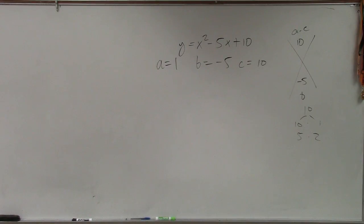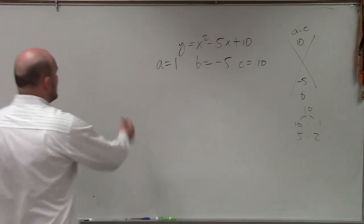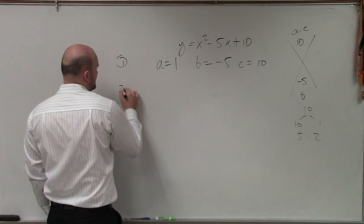Once you go ahead and label this, the next thing, that's step number 1. Now, step number 2 is to identify the discriminant.